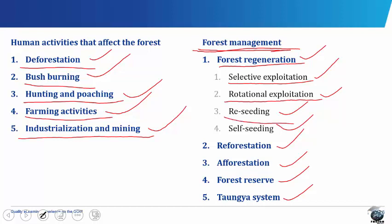In re-seeding, forestry department workers intentionally scatter seeds of desirable tree species in the forest to enrich it many years later. In self-seeding, some plants like neem, oil bean, rubber and the Gamalya produce viable seeds which are dispersed by various natural methods and which can easily germinate — the young plants then replace their parents when they are removed. Reforestation is the organized planting of trees to create forests in areas which have lost their forest characteristics as a result of burning, farming and indiscriminate tree felling.